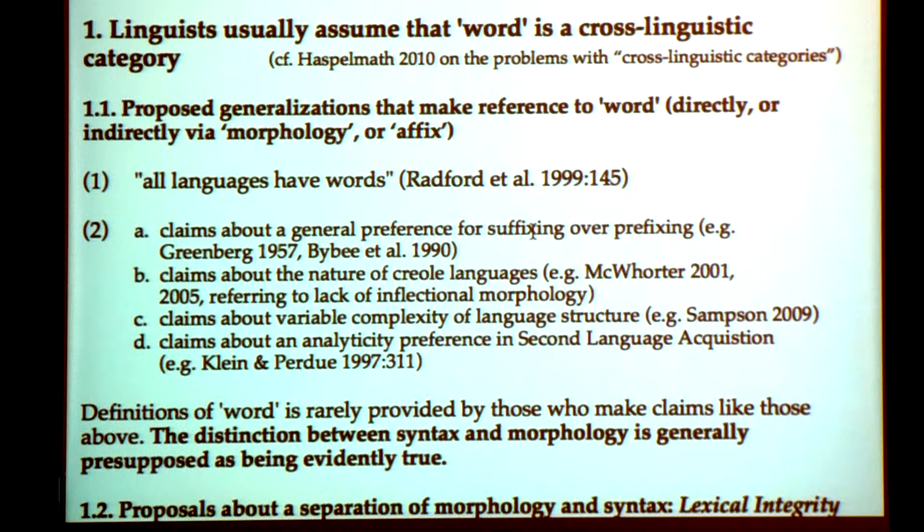This is generally presupposed as being evidently true. But what happens if it isn't evidently true? Then all these things have to be rethought, and that's going to be quite a bit of work for linguistics. I've started this, I hope others will join me, and to some extent it's already happening.